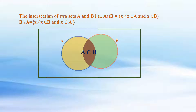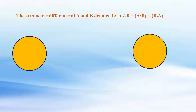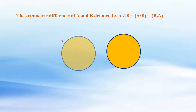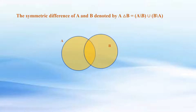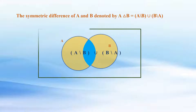B difference A is equal to the set of X where X belongs to B and X does not belong to A. The symmetric difference of A and B, denoted by A delta B, is equal to A difference B union B difference A.